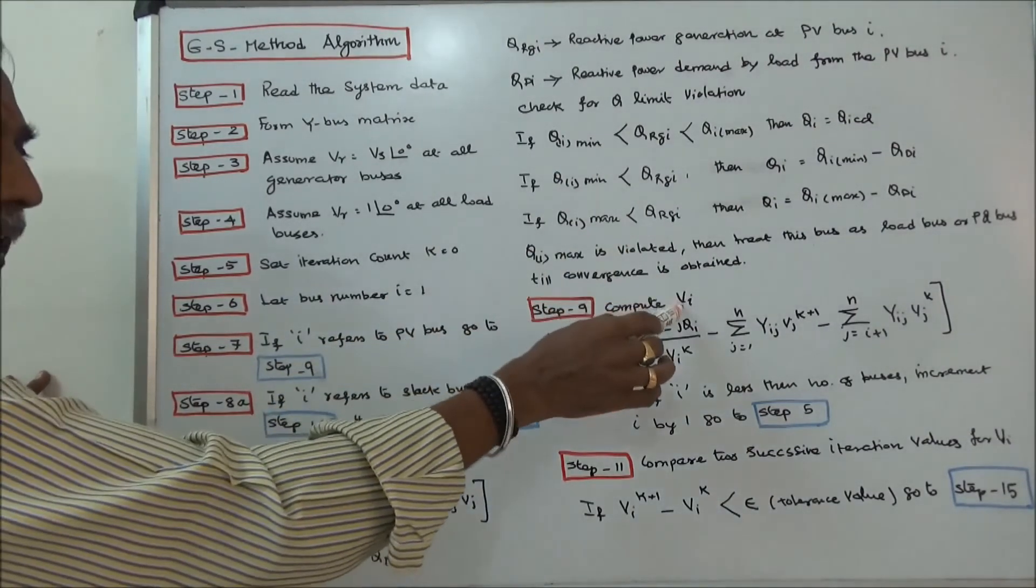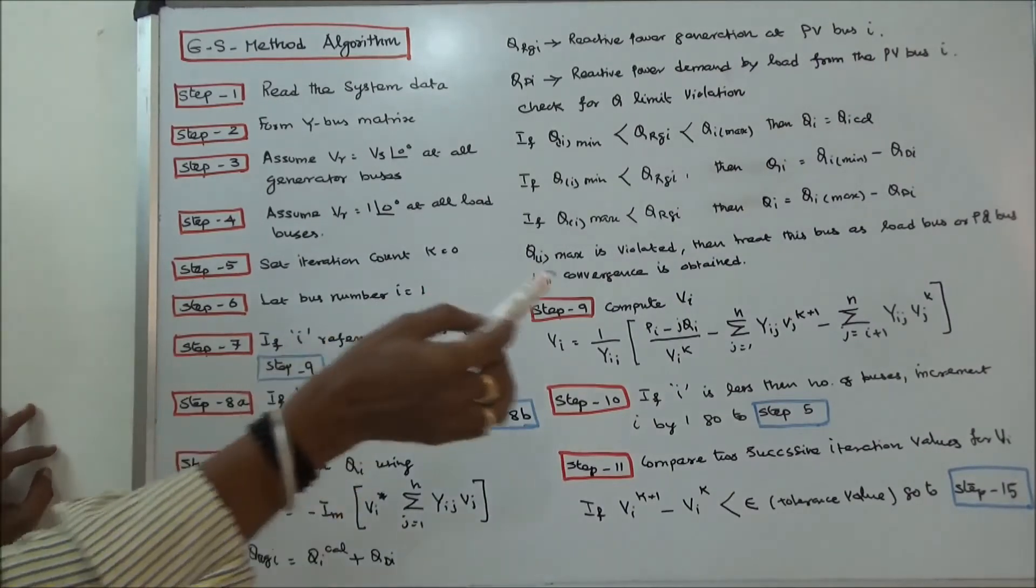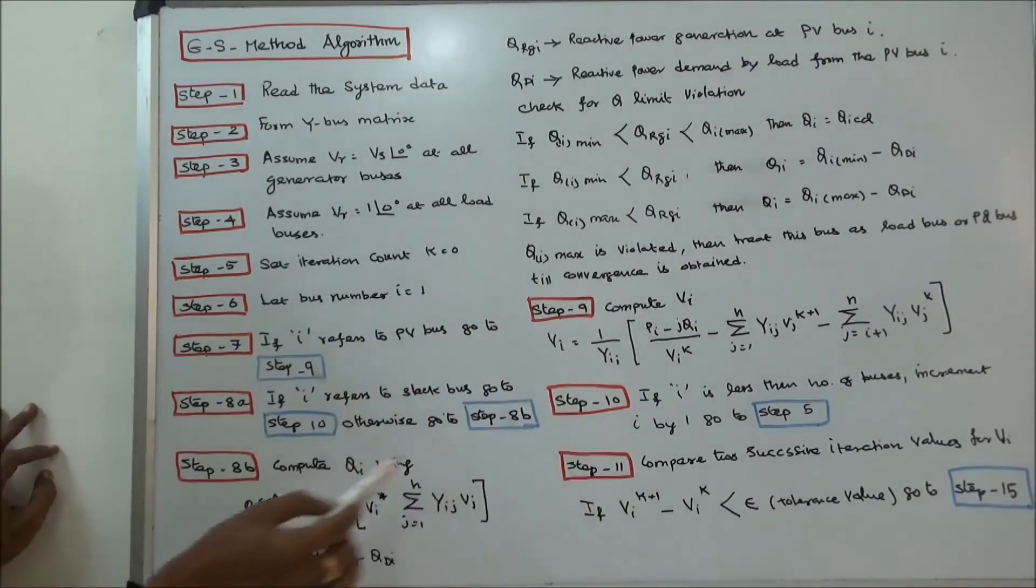Step 9: Compute VI using this formula. Step 10: If I is less than number of buses, increment I by 1 and go to step 5.